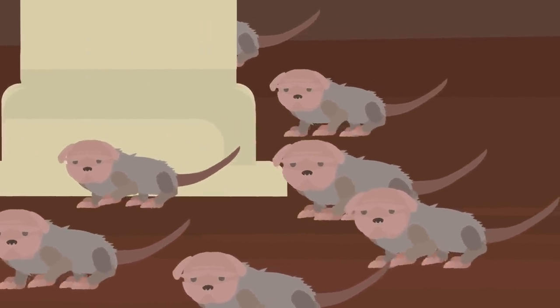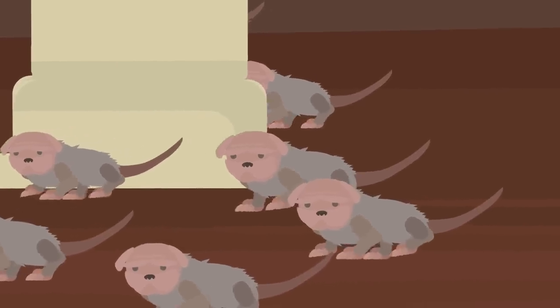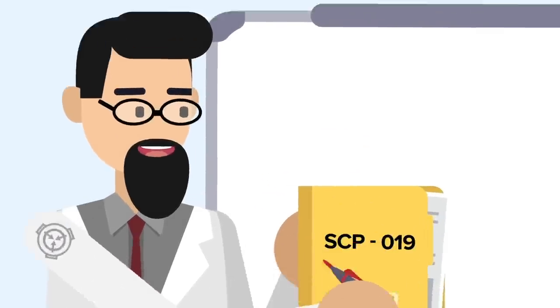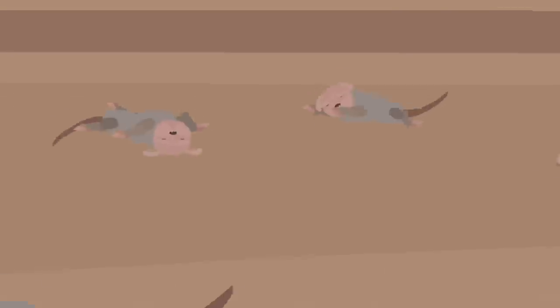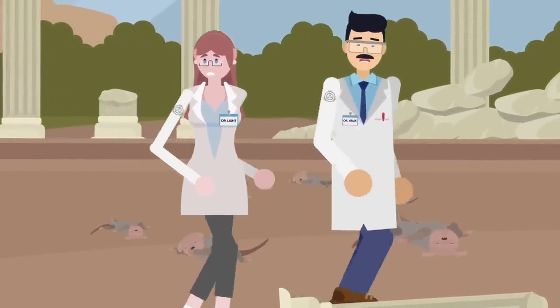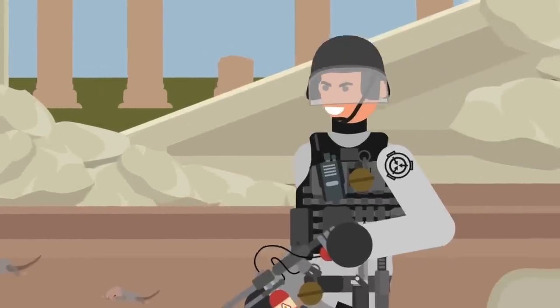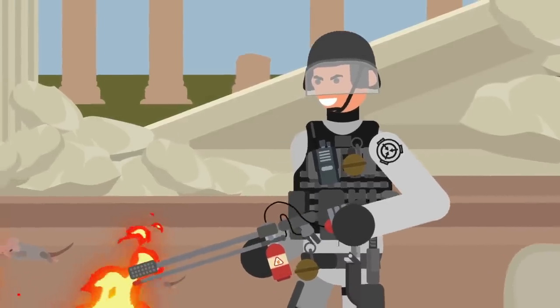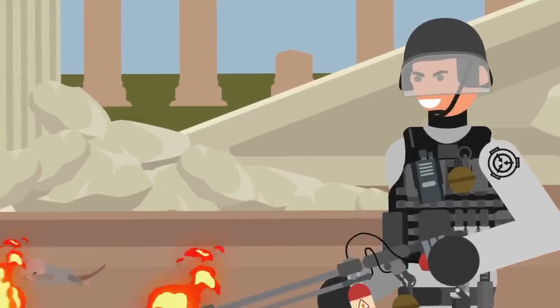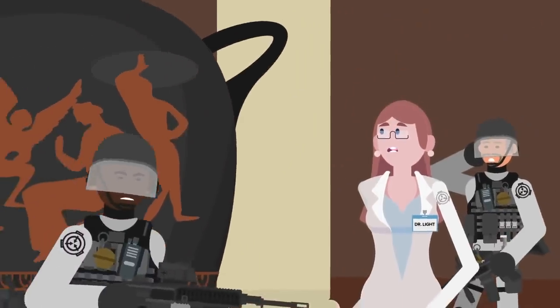The SCP Foundation hears of the incident and sends a team to investigate. They classify the anomalous vase as SCP-019. When they arrive on the scene, the thousands of creatures that were manifested from the vase are found dead. These entities are designated SCP-019-2, and incinerated before any tourists visiting the archaeological site see the corpses.